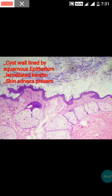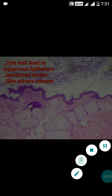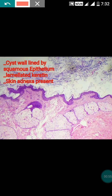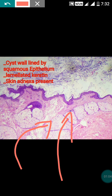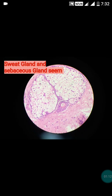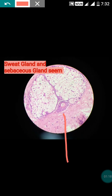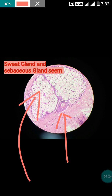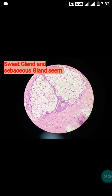The third important point used for diagnosis of dermoid cyst is the presence of skin adnexal structures — sweat glands and sebaceous glands. The sebaceous glands have clear cytoplasm. This is the high power view of the skin adnexa present beneath the epithelium. You can see both the sweat glands and the sebaceous glands.